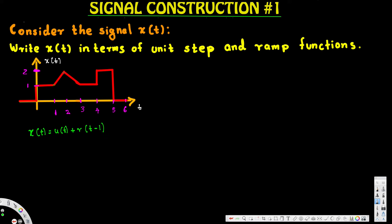The next term has slope of one but it's negative one because it's going down, and it's falling from two. Since the slope is negative we put a negative sign first, and since it's falling from two we put a coefficient of two. It's a ramp function shifted two units to the right, so we write -2r(t - 2).